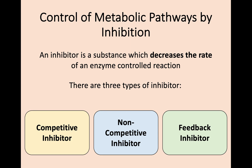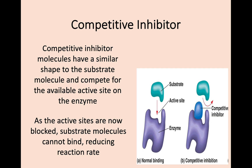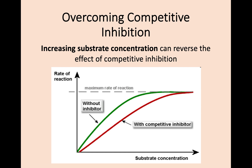Finally, in terms of ways that metabolic pathways can be affected, we are going to talk about something called inhibition. An inhibitor is a substance which decreases the rate of reaction, and there are three ways to inhibit an enzyme: competitive inhibitors, non-competitive inhibitors, and feedback inhibitors. Competitive inhibitors are molecules that have a similar shape to the substrate, so they are able to compete for the active site. If the competitive inhibitor manages to bind to the active site, the active site is now blocked, the substrate cannot bind, and the reaction rate is lowered. The way to counter this is to increase the concentration of the substrate — if there are more substrate molecules available, there's a much higher chance of a substrate binding to an enzyme rather than the competitive inhibitor, and the reactions will be able to continue as normal.